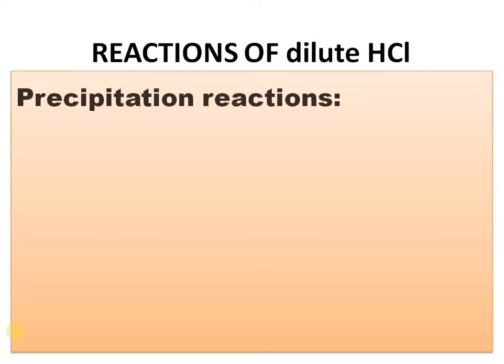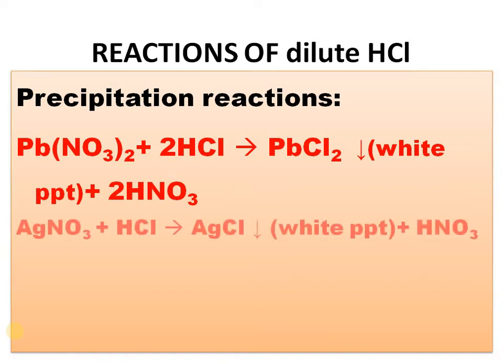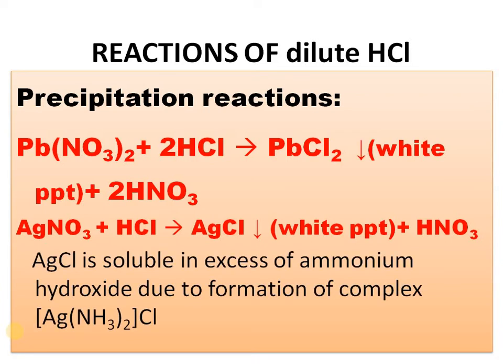Some precipitation reactions of dilute HCl: lead nitrate, which is soluble in water, plus HCl gives PbCl₂ — a white precipitate soluble in hot water but insoluble in cold water. Similarly, silver nitrate (AgNO₃) plus HCl gives AgCl white precipitate plus HNO₃. This is also used as a testing methodology for the presence of chlorides. AgCl precipitate dissolves when excess ammonium hydroxide is added, due to formation of the soluble complex diamine silver chloride.